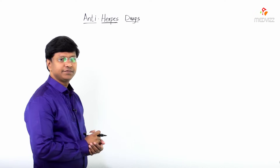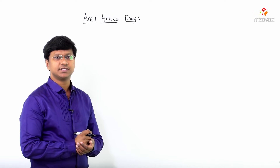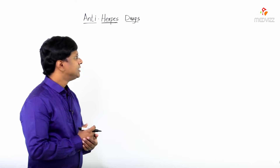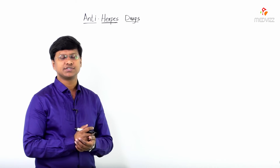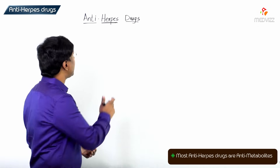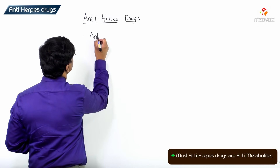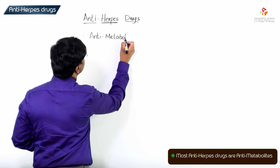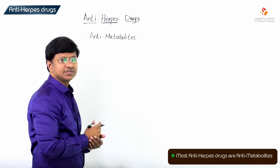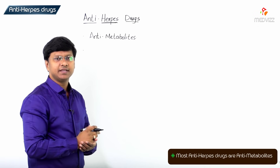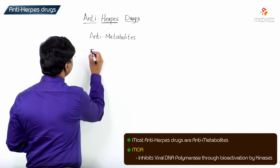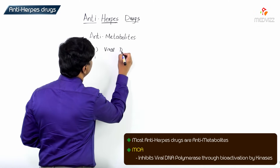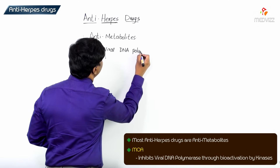In the continuation of antiviral drugs, let me discuss the anti-herpes drugs. These are the group of drugs which are active against herpes zoster. Most of these drugs are anti-metabolites, and they act by inhibiting the viral DNA polymerase.